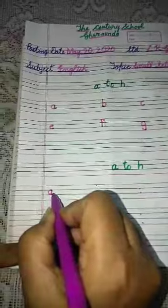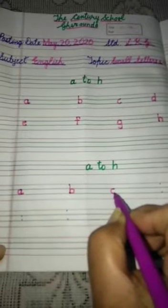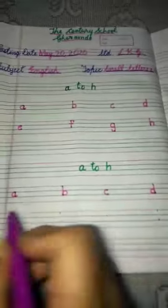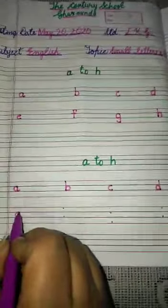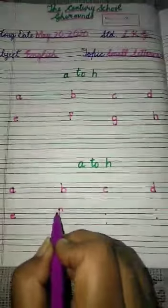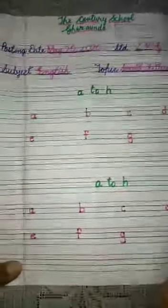This is up, down, A. This is B. This is C. This is turn to left, D. This is E. This is F. This is G. And this is H.